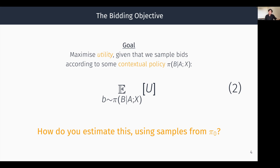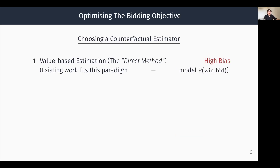There are different ways to do this, and we need to choose which counterfactual estimator to use. There are three broad families. The first are value-based methods, also called the direct method. Here you model the reward you will get from placing a specific bid, and when a new bid request comes in, you use this reward model to infer the optimal bid. Most existing work fits this paradigm — think of win rate estimators in first-price auctions. Value-based methods have low variance but very high bias, because it's hard to model auction and competition dynamics accurately.